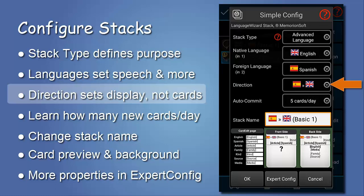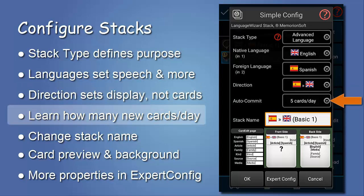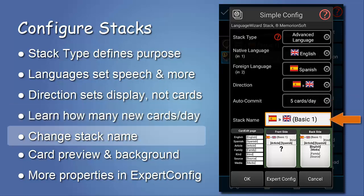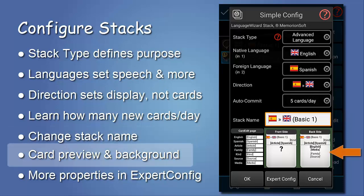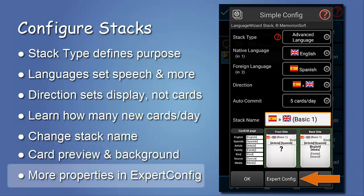The asking direction changes only how the cards are displayed, again not the card contents. AutoCommit sets the number of cards that are automatically added to the learning process every day, but only when you have learned the previous ones. Of course, the stack name can be changed. Tapping the previews sets the background color of the cards. Many more properties can be found under the expert configuration.